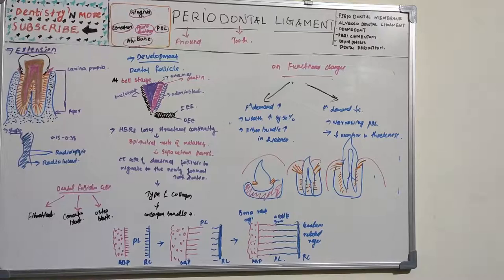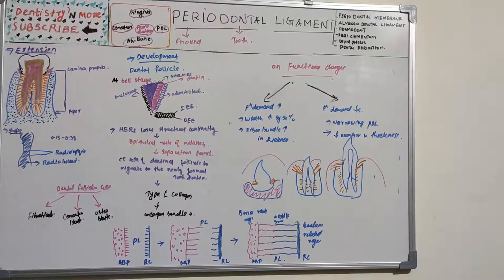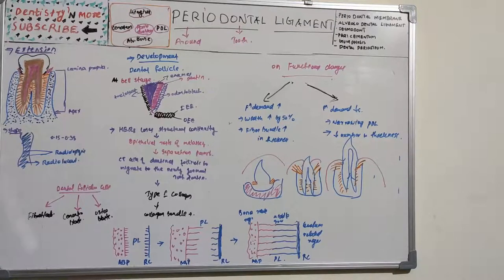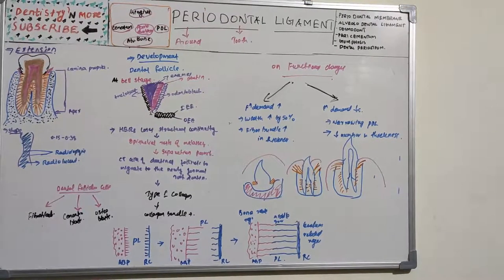The periodontal ligament is a connective tissue that surrounds the root and connects it to the bone. It communicates with the marrow spaces through vascular channels in the bone. This definition is given by Carranza. It has many names — synonyms include periodontal membrane, alveolodental ligament, desmodont, perisementum, gomphosis, and dental periosteum.